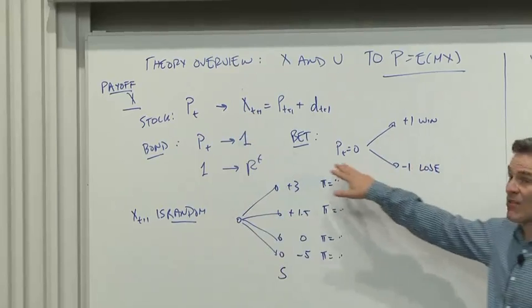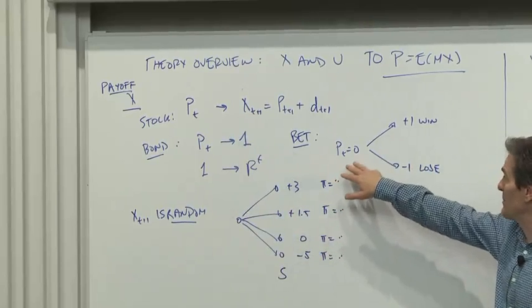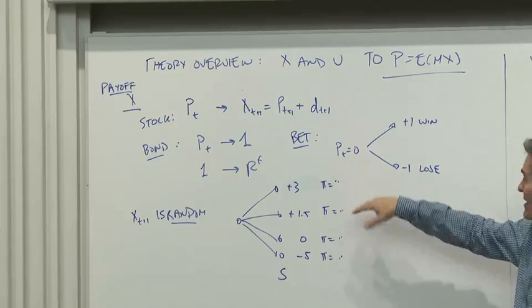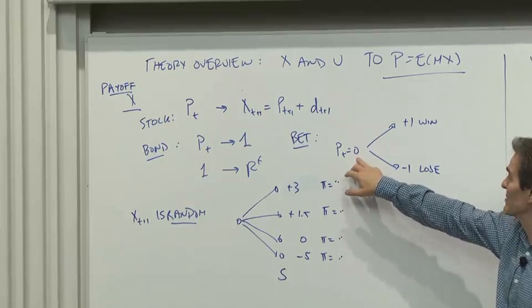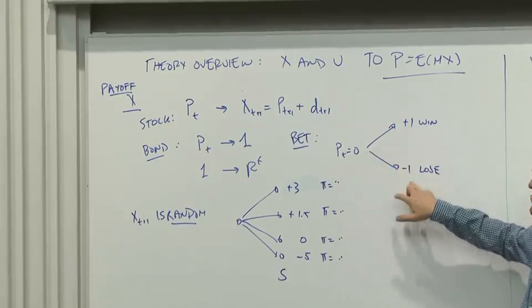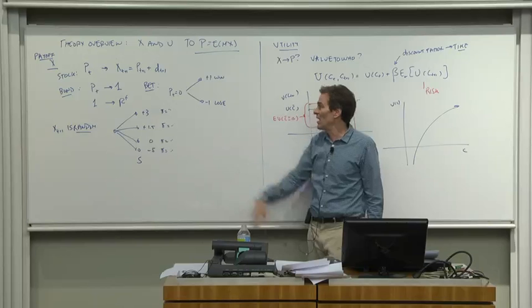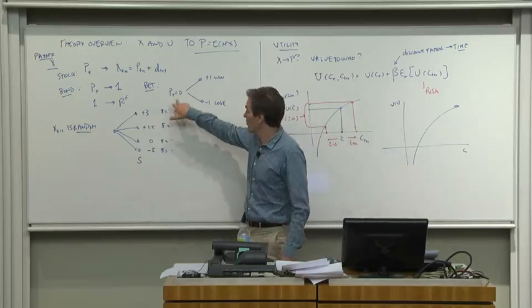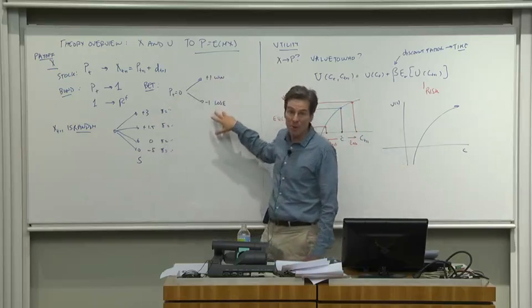The prices can be zero, a classic example is a bet. If you bet against your buddies on the next football game, you put down zero money today and either gain a dollar or lose a dollar according to whether your team wins or loses. All of those can be encompassed into price today and payoff tomorrow.